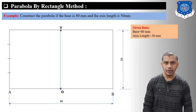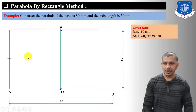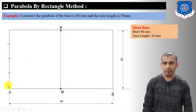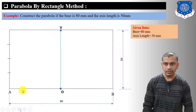If you want to know how to divide a line into equal number of divisions, watch my video on geometric construction — the link is given in the description. As we have divided this line into four equal divisions, we also divide the AO length into four equal divisions.